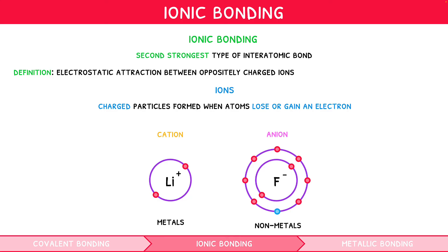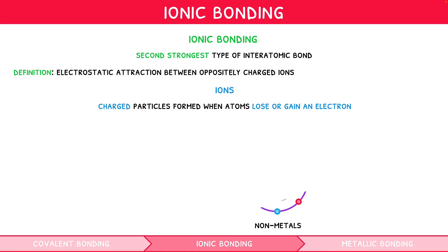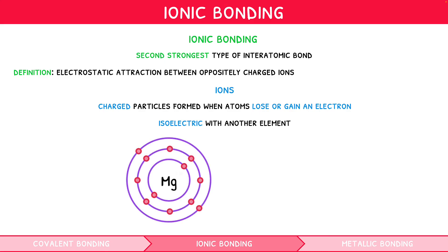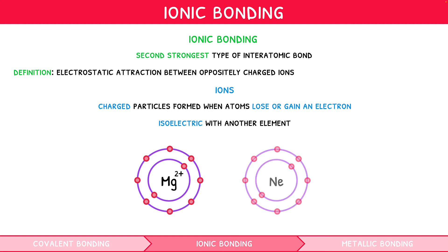You can remember this by just remembering that chemists positively love cats. It is worth noting that once an atom becomes an ion, it is considered isoelectronic with another element — i.e., it has the same electronic configuration. For example, Mg2+ is isoelectronic with Ne.